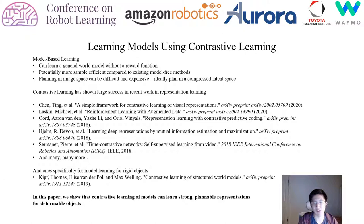In addition, we'd like to plan in a compressed latent space, since planning in image space can be difficult and expensive. To do this, we leverage contrastive learning, which has shown a lot of recent success in representation learning for images and also in model learning for rigid objects.